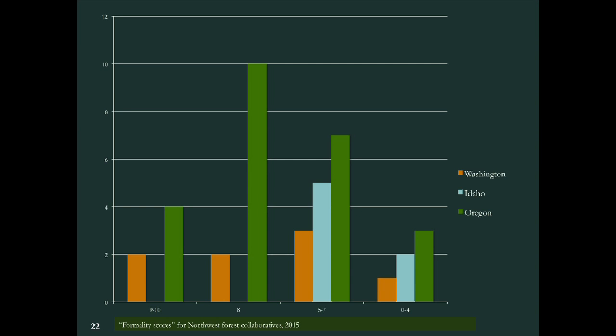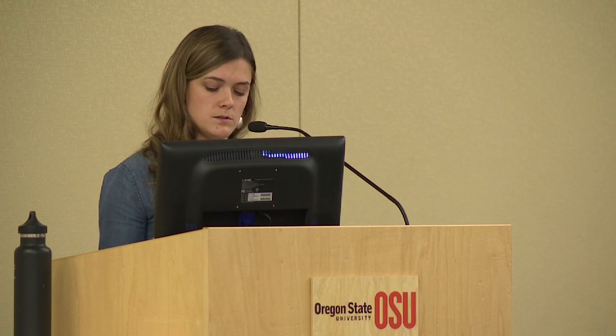We also tried to characterize in a standardized way the organizational features of collaboratives, compiling information on frequency of meetings, use of committees, dedicated facilitation, presence of operational charters and rules, and assigning those numbers to make scores — what we're calling a 'formality score.' A higher formality score, like eight to ten, indicates they're more formal; a lower score indicates they're less formal. We're not necessarily saying one is better or worse. Higher formality is really common, particularly in Oregon — a score of eight is very high, meaning they have all those organizational features. Only six of the collaboratives in the Northwest are 501(c)(3) organizations.